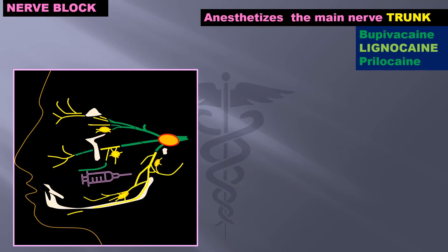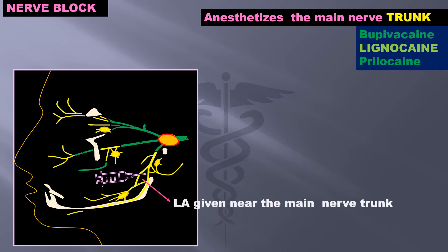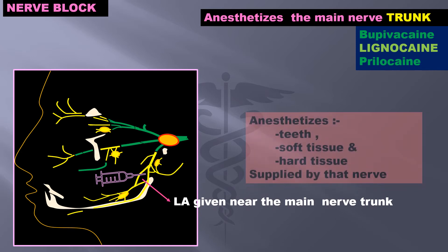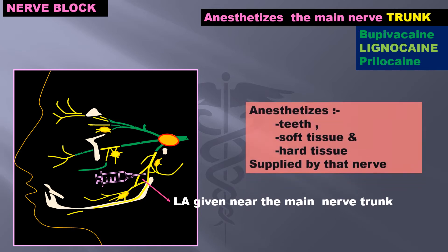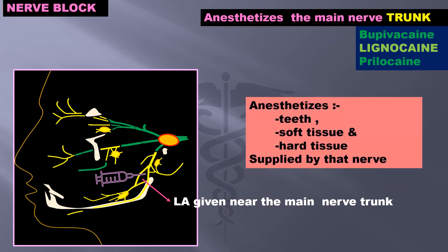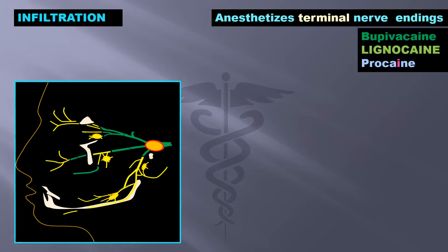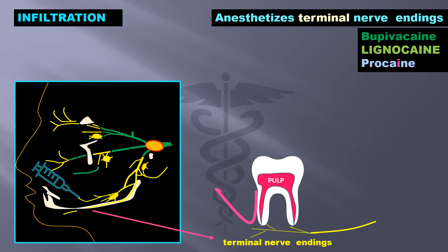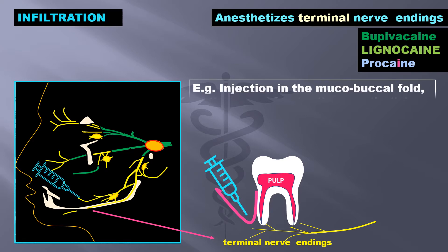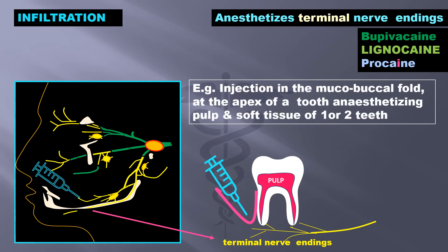In a nerve block, LA is given near the main nerve trunk. It anesthetizes teeth, soft tissues, and hard tissues supplied by that particular nerve. In infiltration, terminal nerve endings are anesthetized. For example, an injection given in the mucobuccal fold at the apex of a tooth, anesthetizing the pulp and soft tissues of one or two teeth.